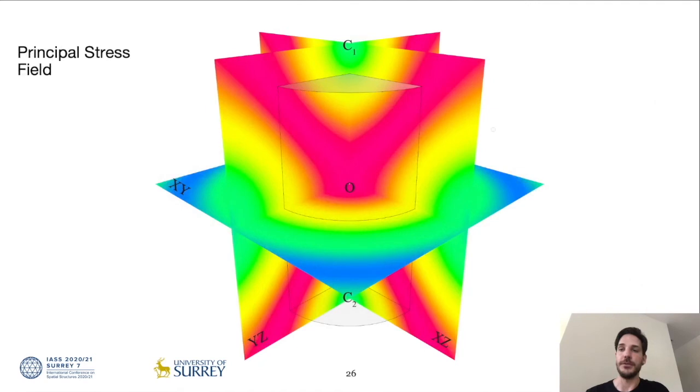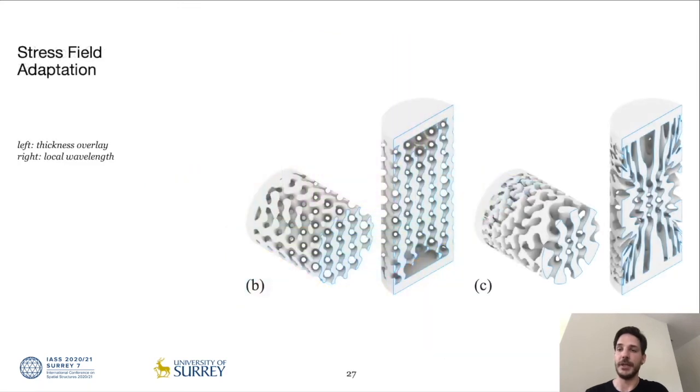With the targets to improve the stiffness or the strength of the part, the modifying field can also be the principal stress distribution retrieved from finite element analysis. The field obtained from FEA can be used to modify, for example, the thickness or the local wavelength of the lattice according to the principal stress distribution.